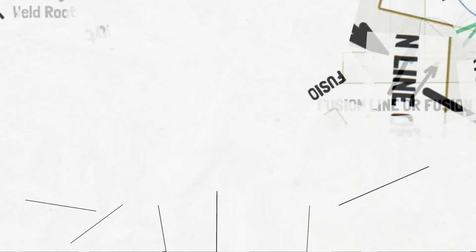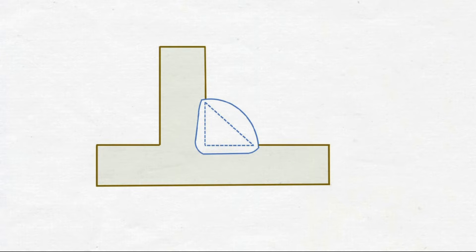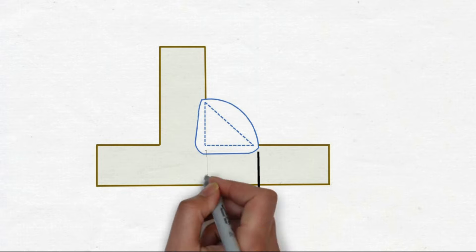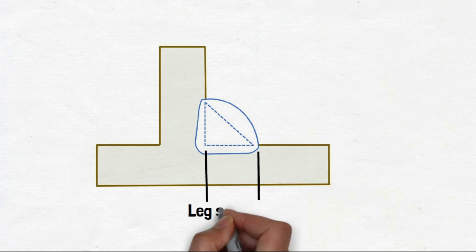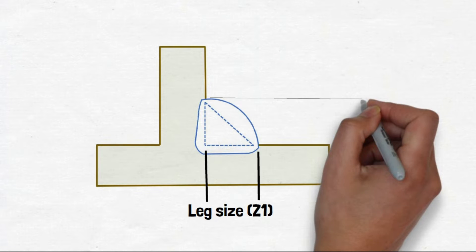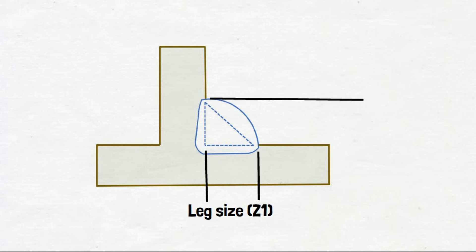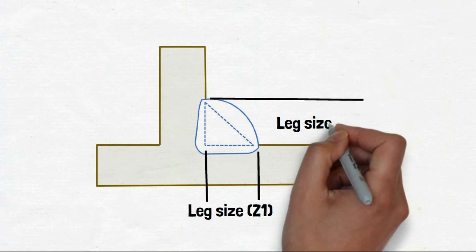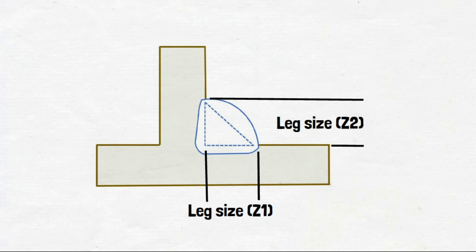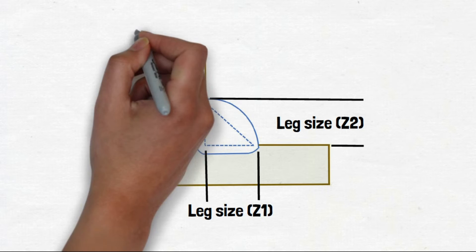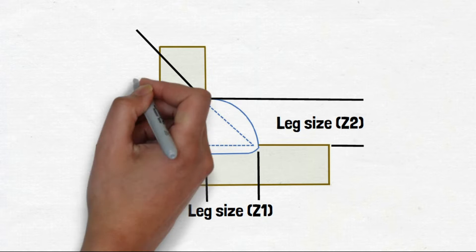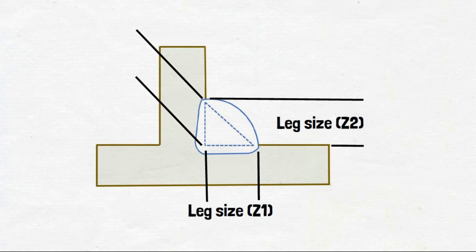Fillet weld size is measured by using leg sizes or throat size, also called A.